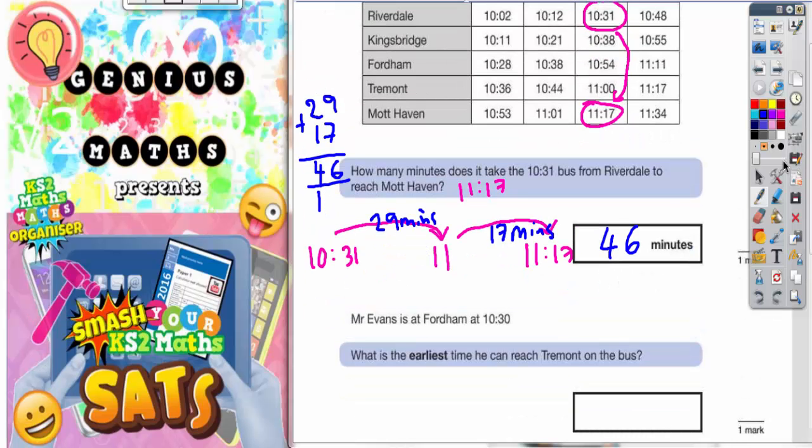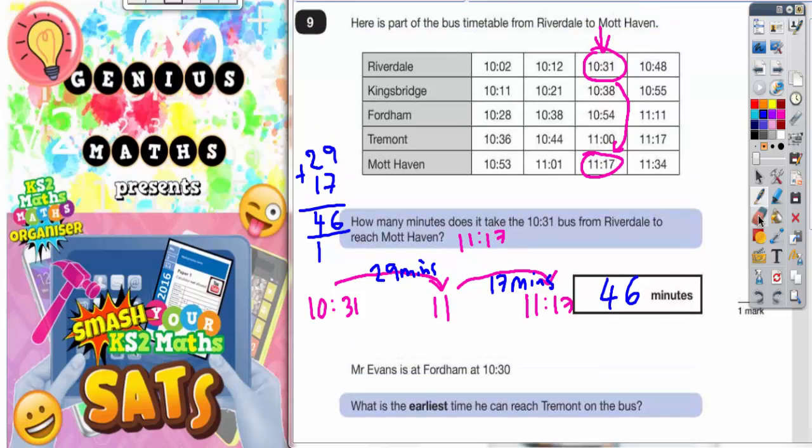Scroll down and look at what we've got to do next. Mr Evans is at Fordham at 10:30. What's the earliest time he can reach Tremont on the bus? So he's at Fordham at 10:30.